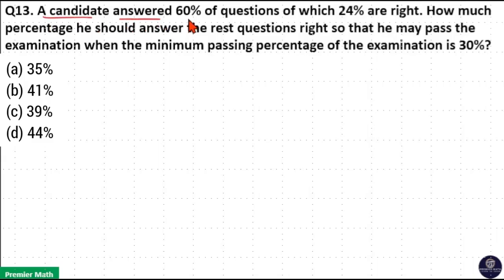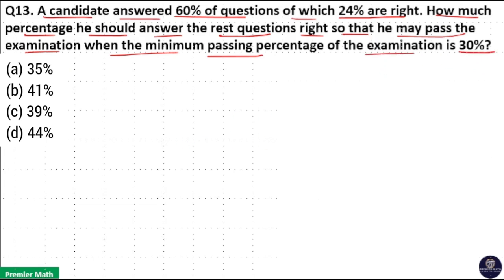A candidate answered 60% of questions, of which 24% are right. How much percentage should he answer the rest of the questions right so that he may pass the examination when the minimum passing percentage is 30%?